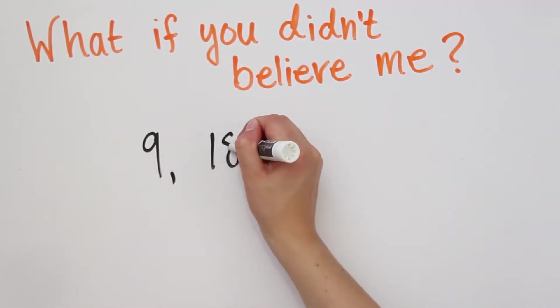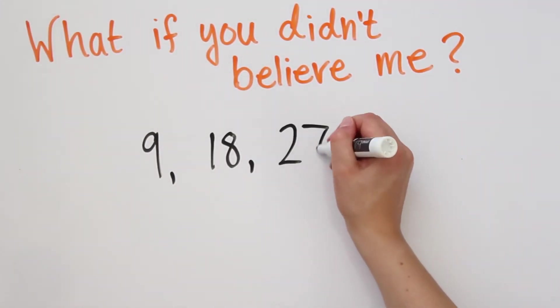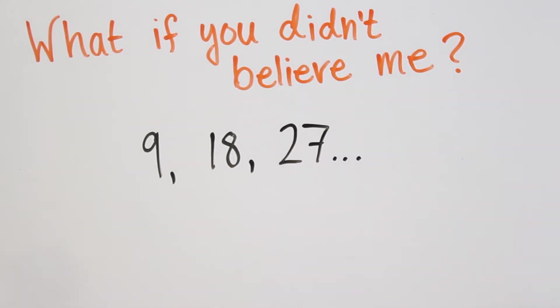First, we know that the trick works for 9, 18, 27, and other small numbers, because those are easy to check.